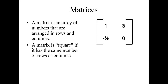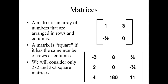A matrix is a square matrix if it has the same number of rows and same number of columns. For example, if my matrix has two rows and two columns, I will call this a square matrix. If I have three rows and three columns, it will be considered a three by three square matrix. This matrix here has two rows and two columns, so it is a two by two square matrix, and this one has three rows and three columns, so it is a three by three square matrix.